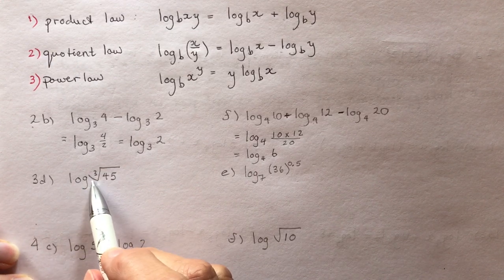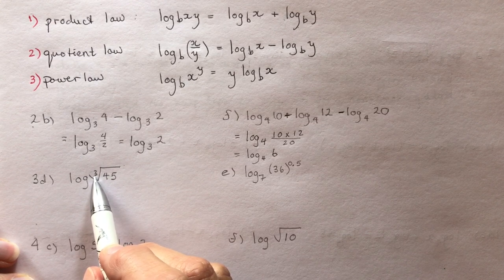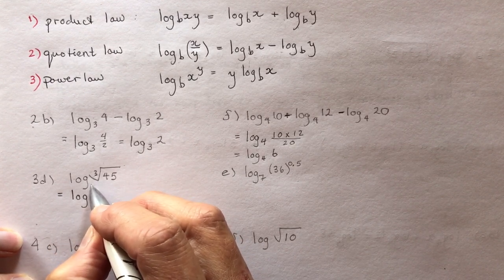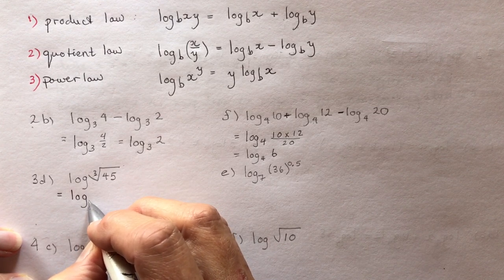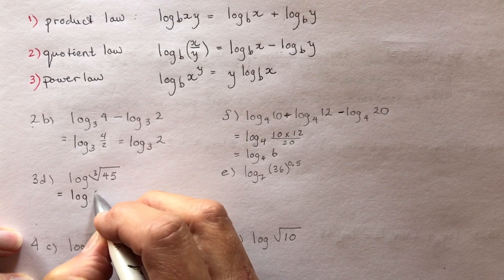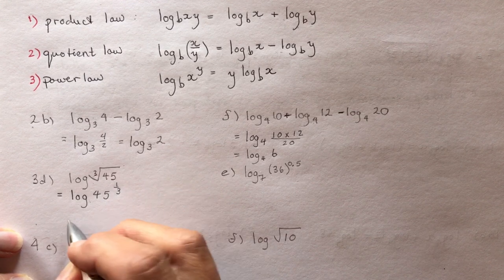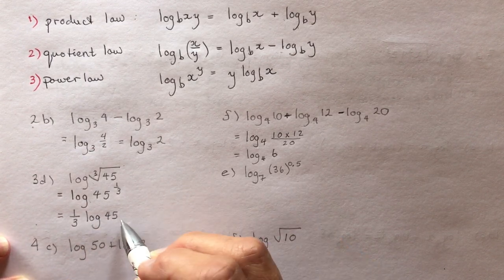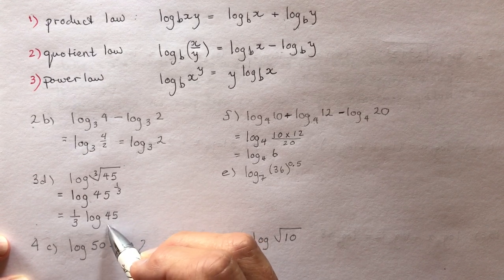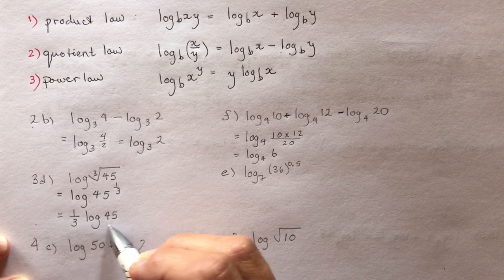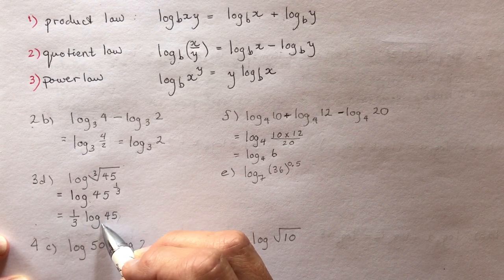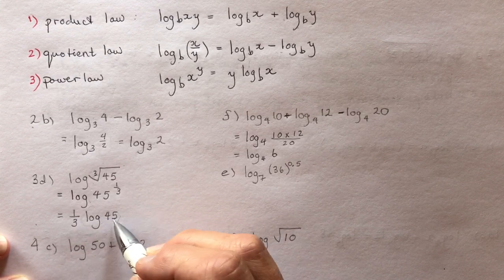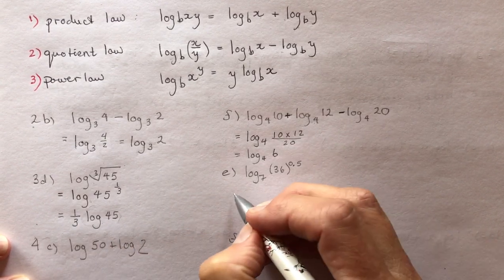Now here, remember the 3 in front of the radical means cube root, which is the 1/3 power. So I can write this as log of 45 to the 1/3 power — there's no base written, so the base is 10. That becomes 1/3 times log of 45. You could evaluate this on your calculator by entering log(45) divided by 3, but that's not what the question was asking.